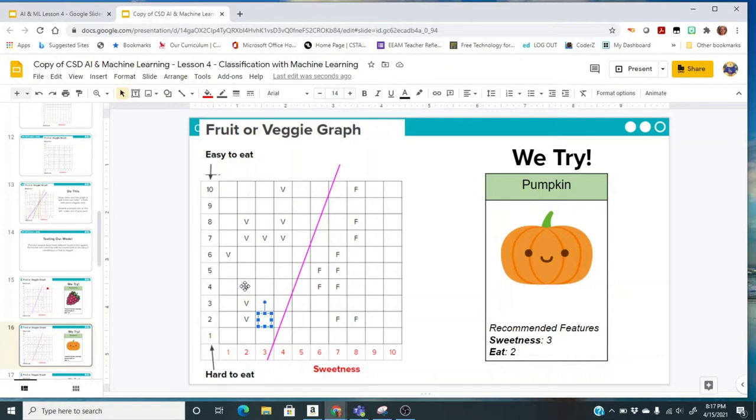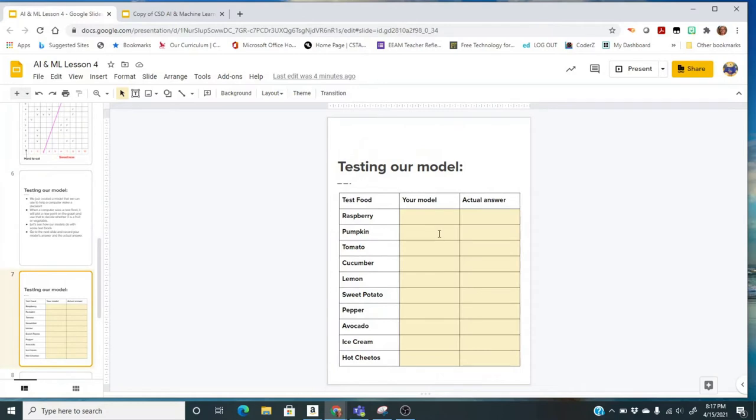So my model says it's a vegetable and it really is a vegetable. So we were 2 for 2. I would put vegetable, vegetable.